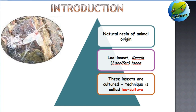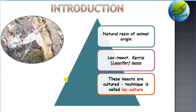Lac insect — the name itself indicates that it is producing one of the commercial products, that is lac. Lac is a natural resin of animal origin. There are two kinds of resins available: the first one is natural resin and another one is synthetic resin. In natural resin, there are two kinds based on their origin — plant origin and animal origin. There are a lot of plant origin resins available in nature, but in the case of animal origin there are very few.